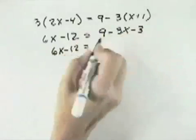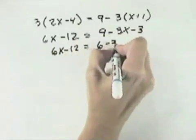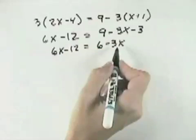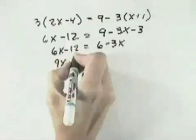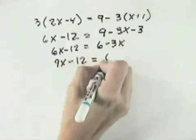On the right side, we can combine the 9 minus 3 to get 6 minus 3x. Now if we put all the x's on one side, I'm going to add 3x to both sides to make this 9x minus 12 equals 6.